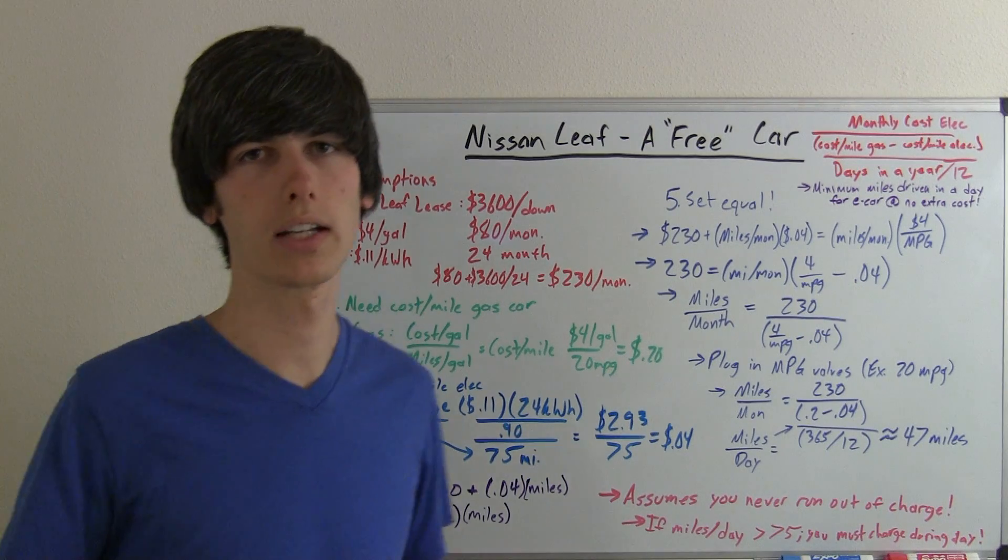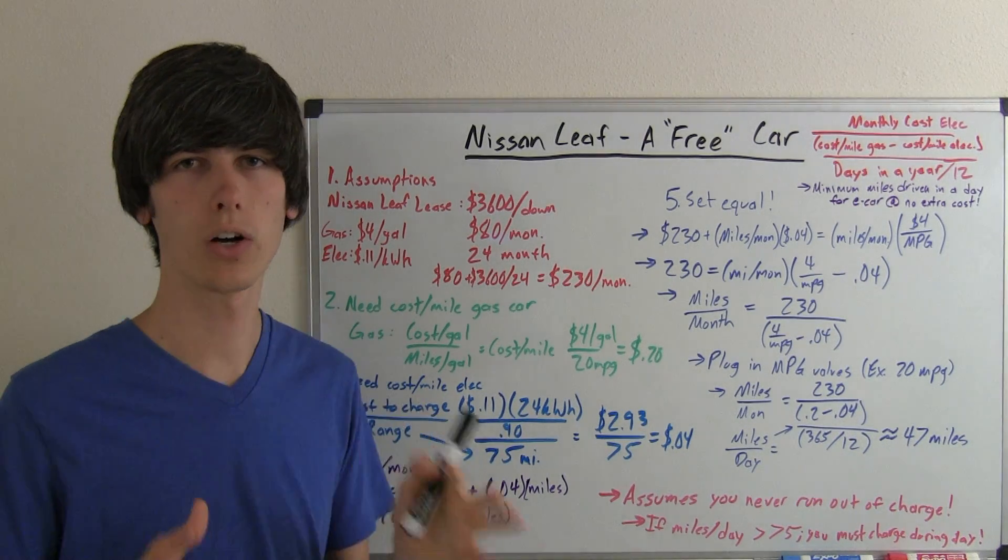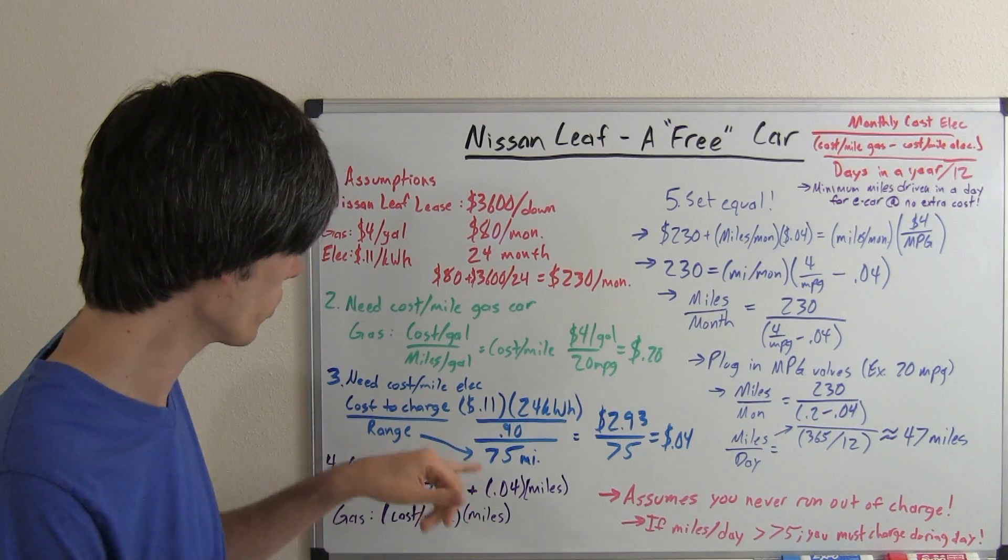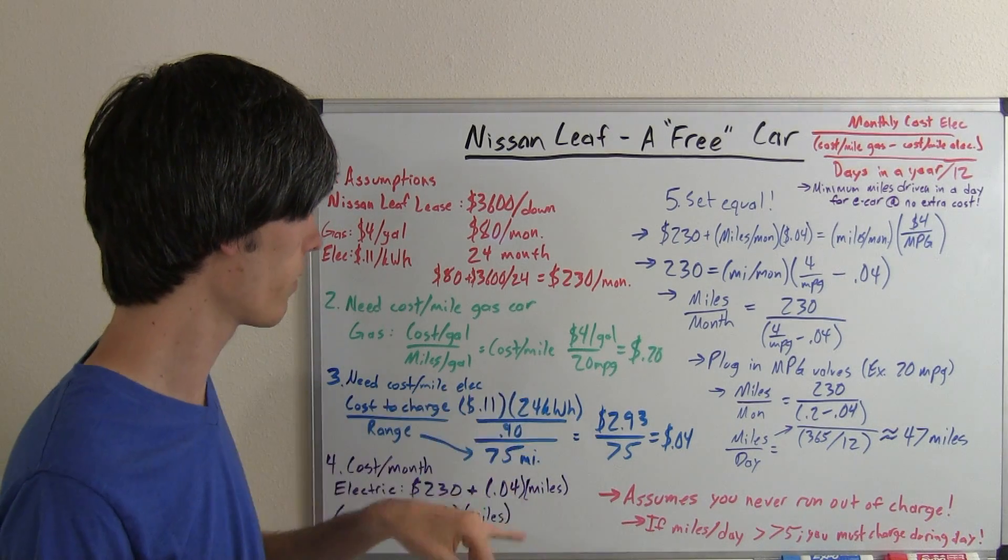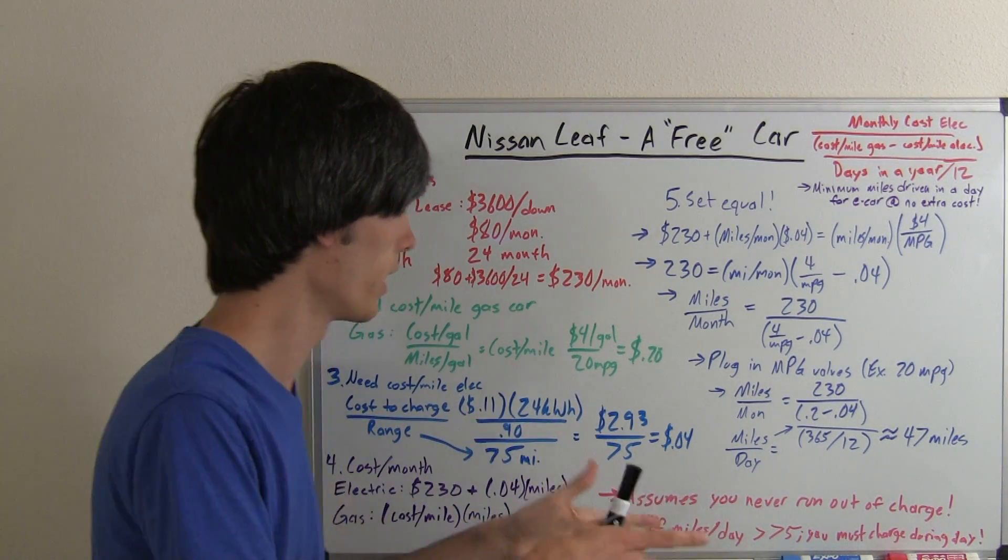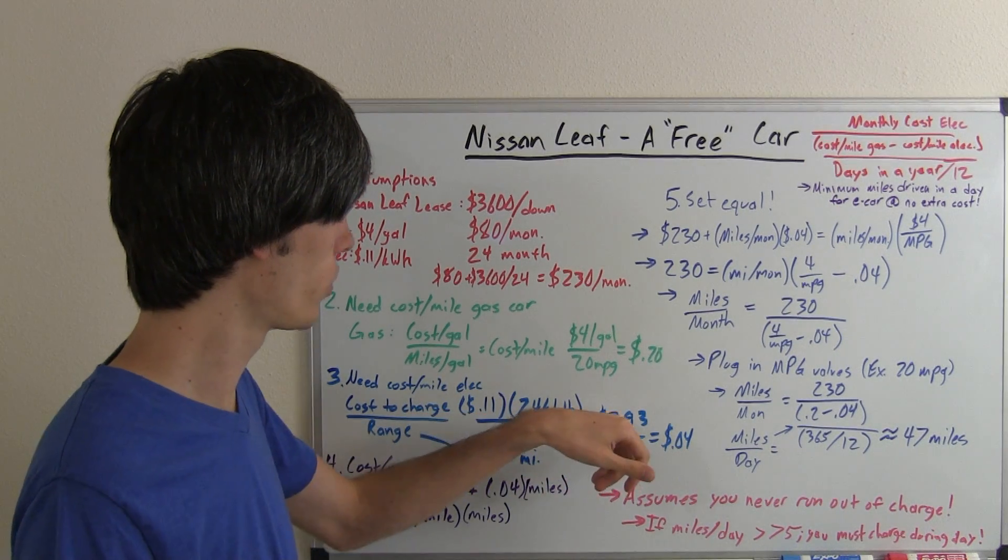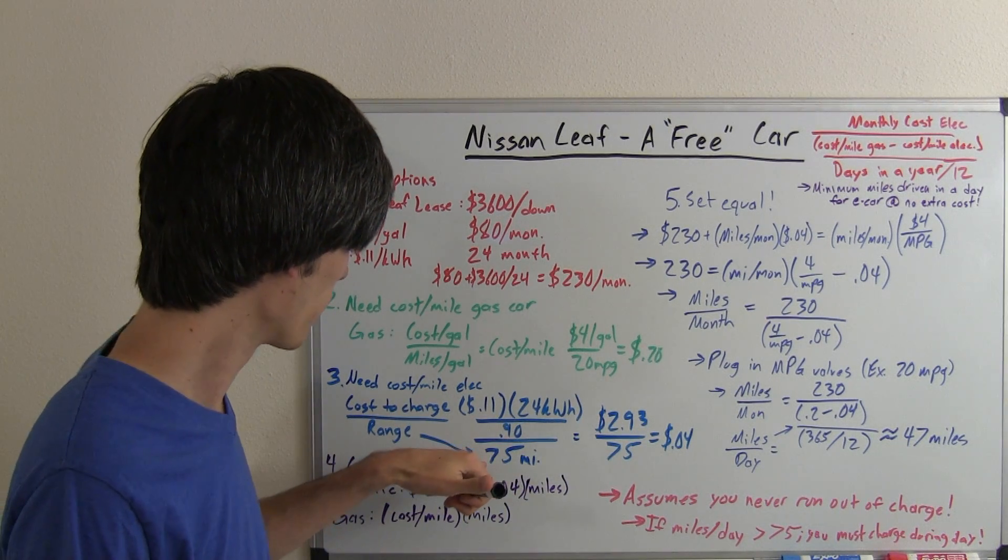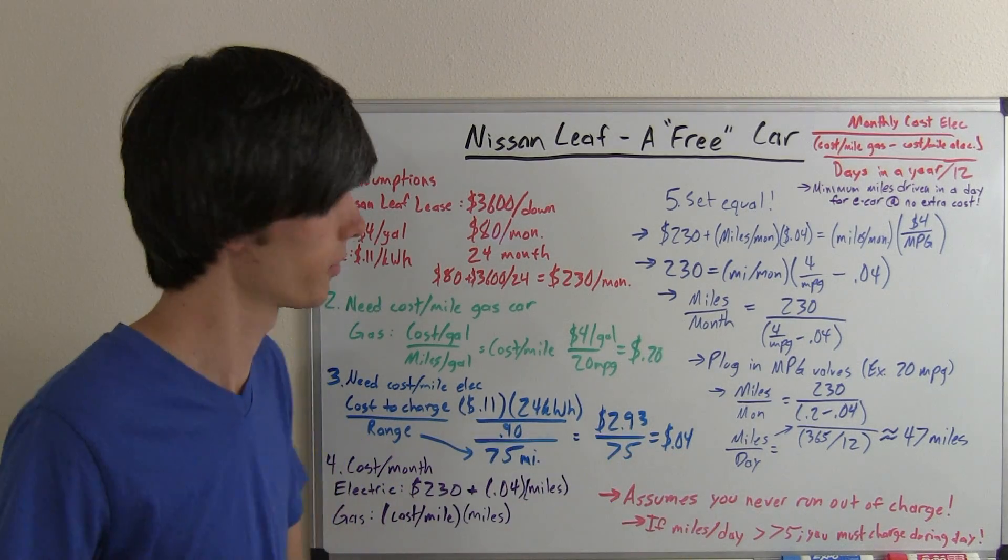Step 3, we need the cost per mile of the electric vehicle. And this is a little bit more complicated than simply the gas car. Basically what you need to do is find out the cost to charge the entire vehicle and its range. You divide that cost of the charge divided by its range and that will give you the cost per mile. The cost to charge a Nissan Leaf, we've got 11 cents per kilowatt hour. The Nissan Leaf has a 24 kilowatt hour battery, and we're going to assume that the charging occurs with 90% efficiency. So 90% of the energy you put into charging that battery is actually successfully charging that battery. 11 times 24 divided by 90, that gives us $2.93 to charge the vehicle, which is pretty awesome, just $3 to fill up your Nissan Leaf. The range is about 75 miles. So 293 divided by 75, you have a cost per mile of about 4 cents.